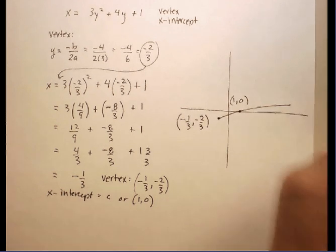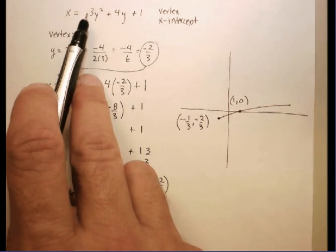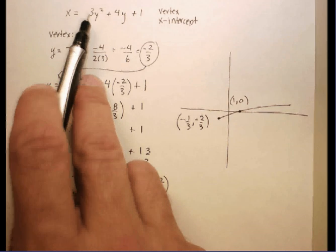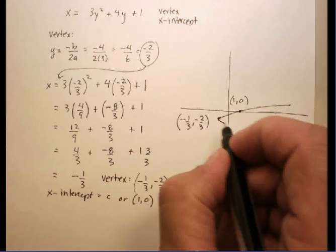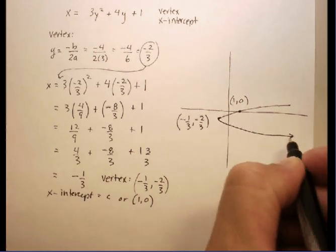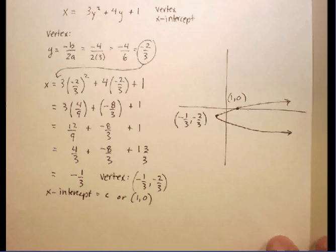So now when I sketch, I'm going to open to the positive direction because my a value is a positive 3. And there is my graph.